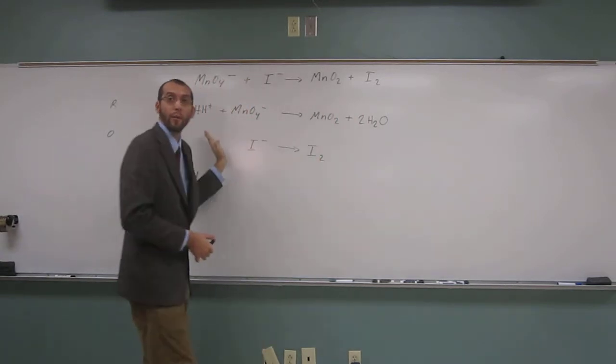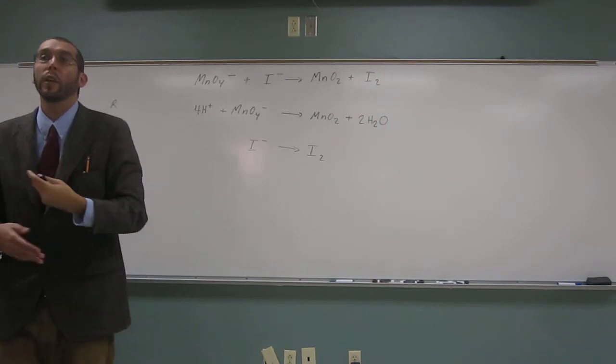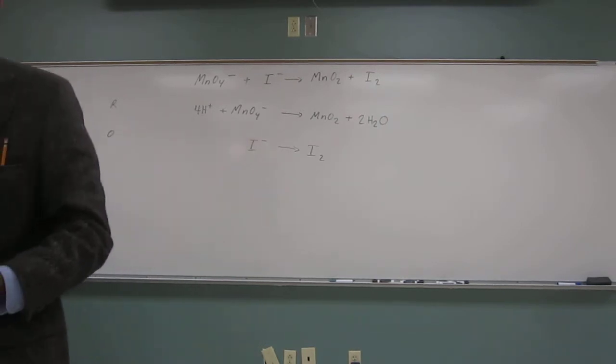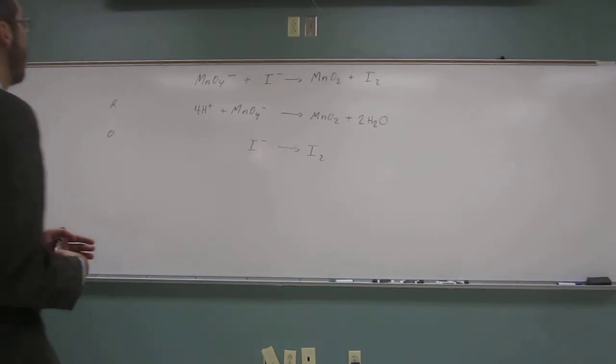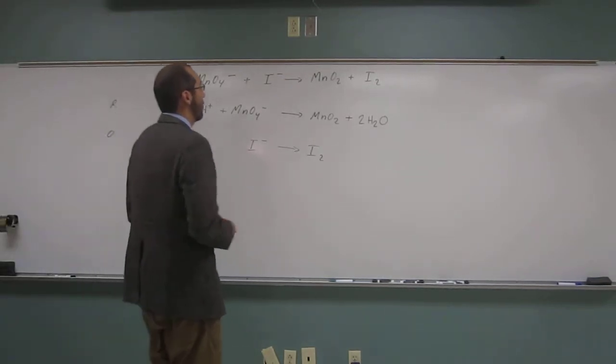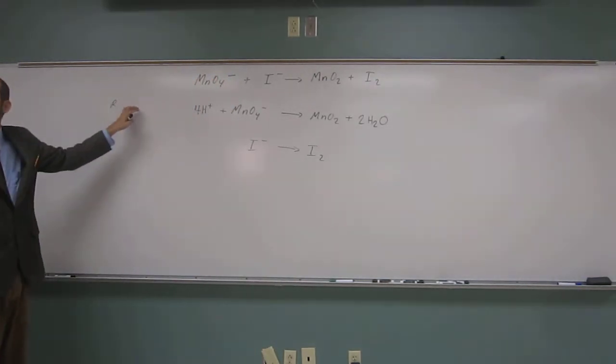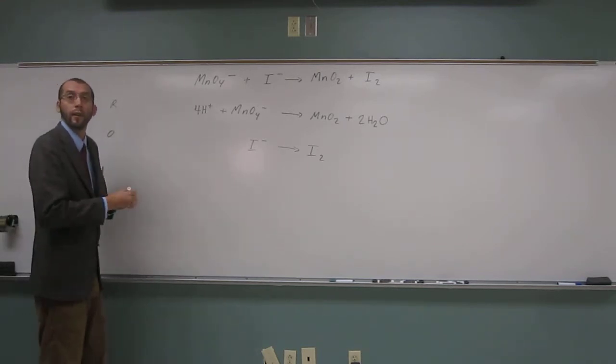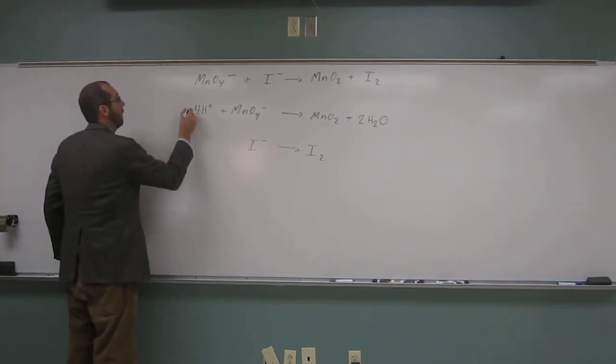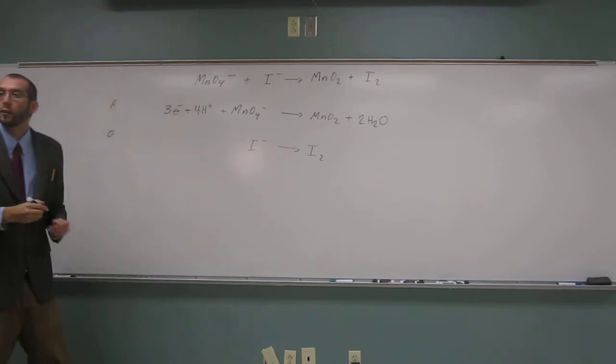So is the charge the same on both sides of the reaction? No. So the only way we can balance our charges is to add electrons. And remember electrons are negatively charged. So which side of the reaction would we be adding those electrons to? The left side. So how many would we add? Three. Three electrons like that.